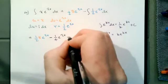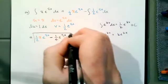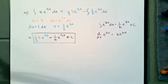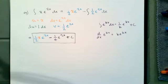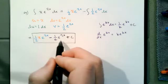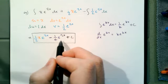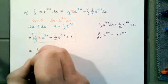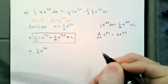Integrating one-half e to the 2x gives one-fourth e to the 2x, and then we add plus C. One thing you might notice is that there's a common factor of e to the 2x. If you check your work on Wolfram Alpha, it may factor that out, leaving the result written differently. So be aware: if your answer has all terms with e to the 2x, there's a common factor there.